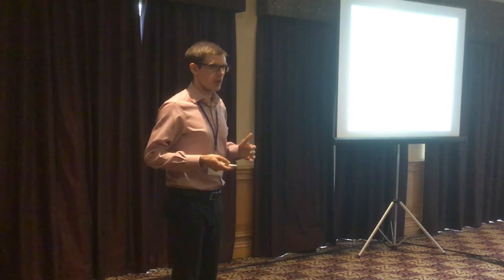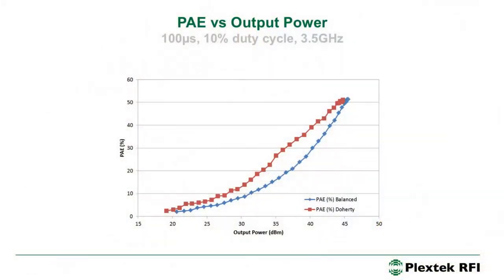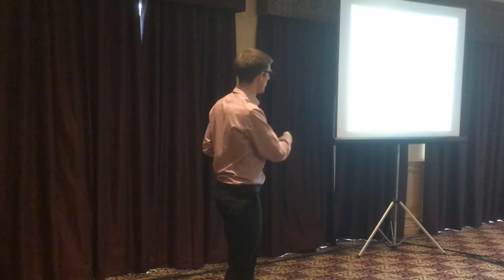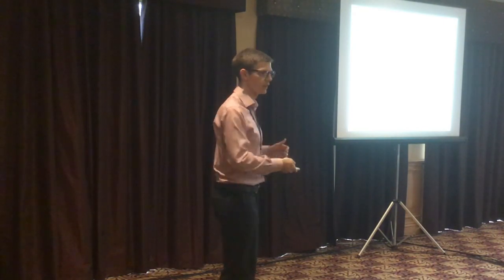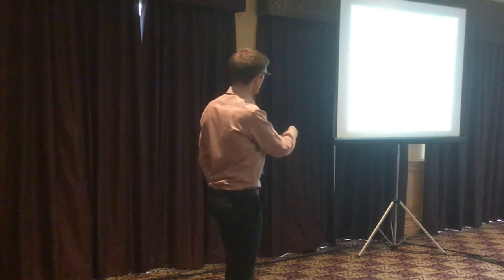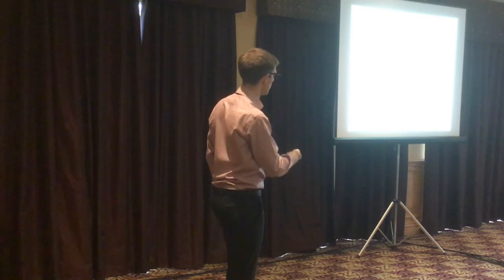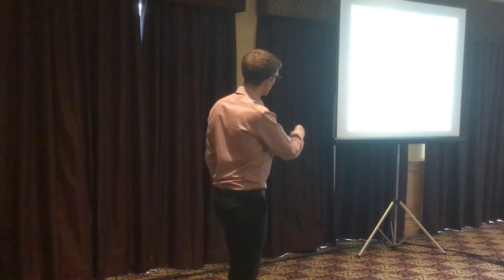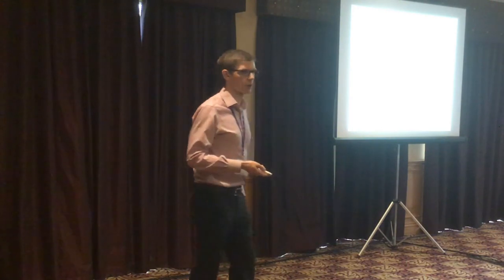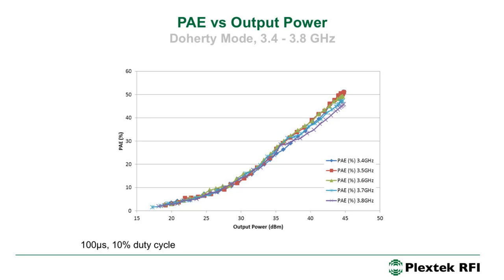We then measured the Doherty amplifier in high power mode using a pulsed 100 microsecond, 10% duty cycle signal. In balanced mode the efficiency follows a classic class B / class AB curve, but the Doherty mode does significantly better. At the peak output power of 45 dBm, they show similar efficiencies, but at 37 dBm back-off, the balanced amplifier gives about 20% PAE whereas the Doherty gives 31.5% PAE. Measured across frequency from 3.4 to 3.8 GHz, we see nice repeatability and a flat design, achieving about 32% back-off efficiency across all frequencies.